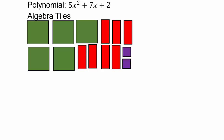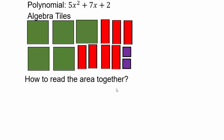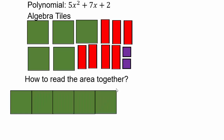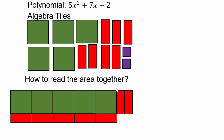Assuming you've come back, there are many different ways you can arrange these into a rectangle. Let's take a look at one of them. We have 5 x squared pieces. The only way I can make a rectangular piece out of the squares would be if they are all horizontal or all vertical. I only have 2 purple pieces, so I'm going to go 2 across and 5 down. That makes it a perfect rectangle.